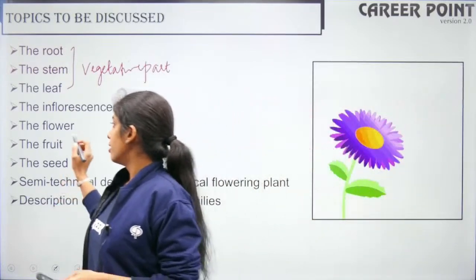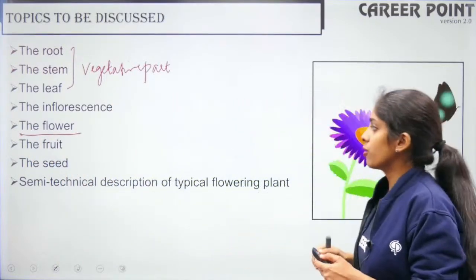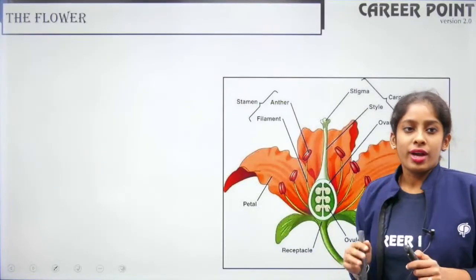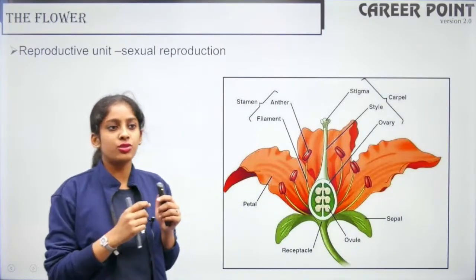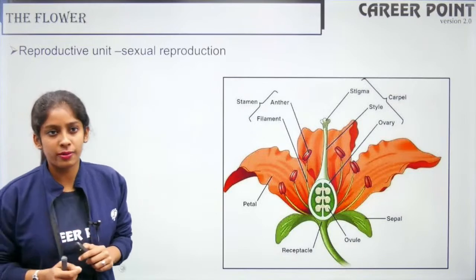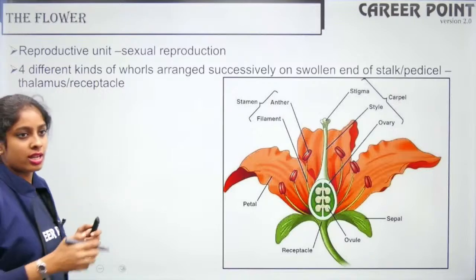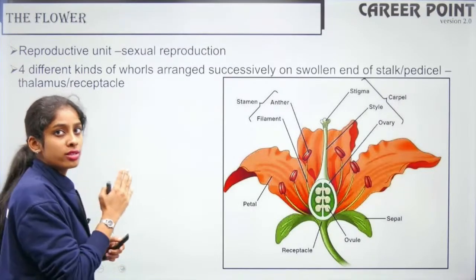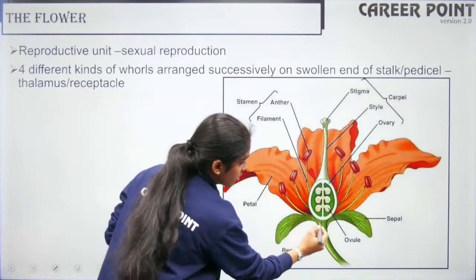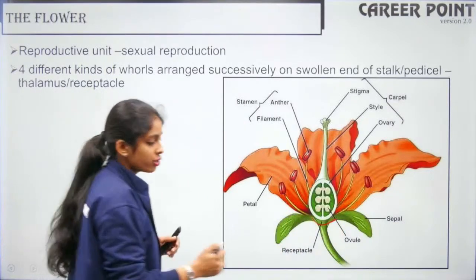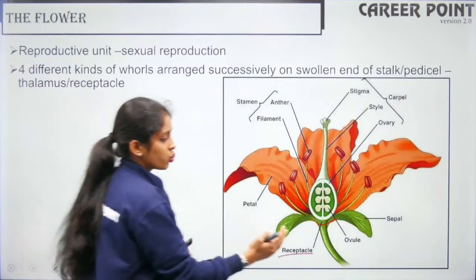Today we will finish the flower. Your flower has four whorls. The flower is the reproductive unit of your plant and is used for sexual reproduction. The four whorls are arranged on a platform called the receptacle or thalamus — that is the platform on which all four parts of your flower are arranged.